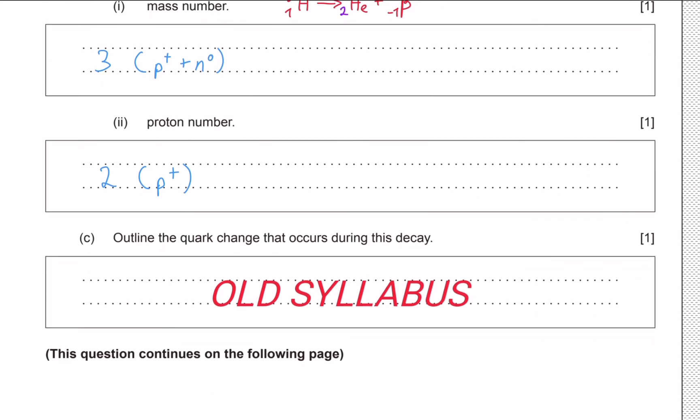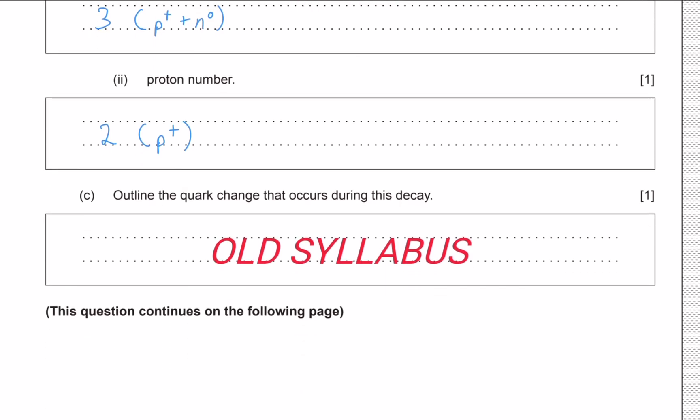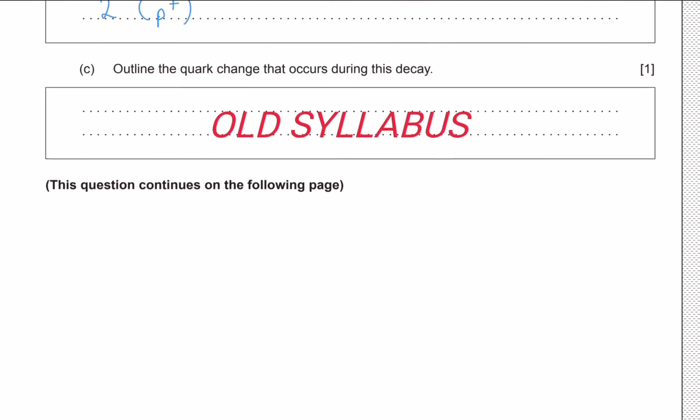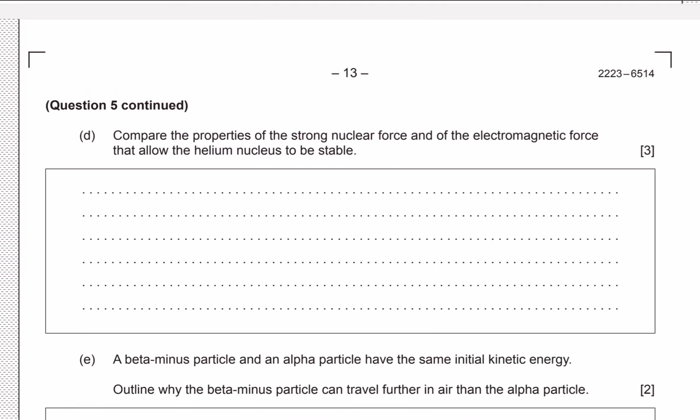The next question is part of the old syllabus - we don't need to learn about quarks anymore. And then in part D we need to compare the properties of the strong nuclear force and the electromagnetic force that allow the helium nucleus to be stable.